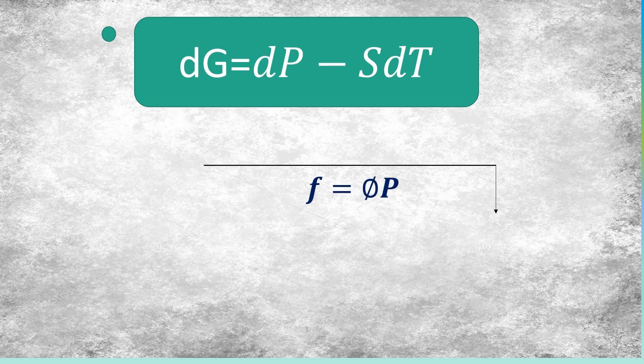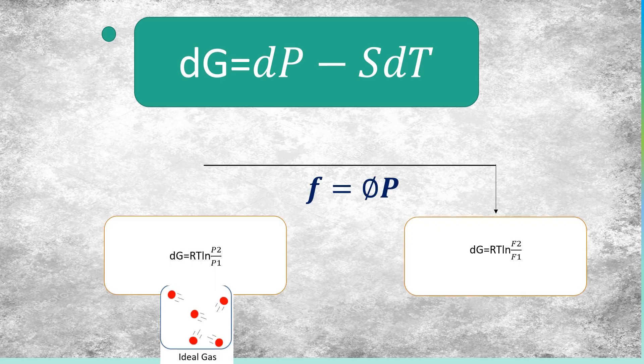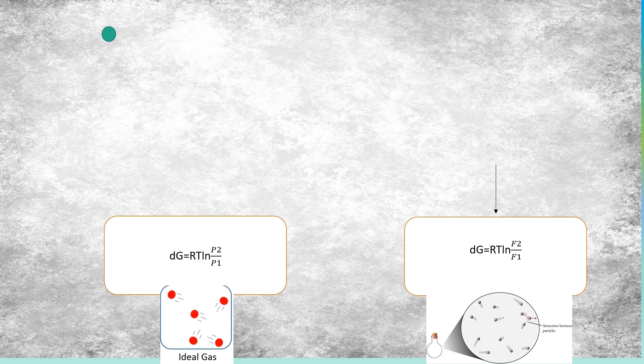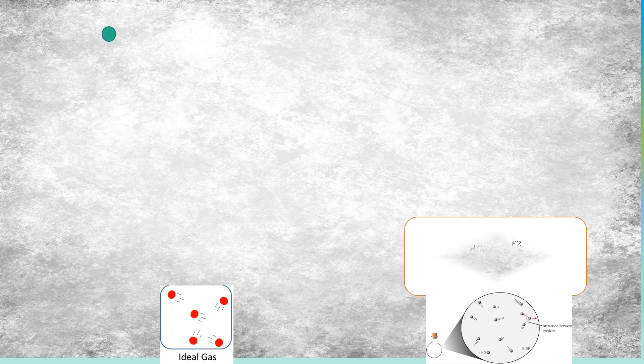From the equation of Gibbs free energy at constant temperature, in order to use the ideal gas equation of state but for a real gas, we substitute the pressure with fugacity.